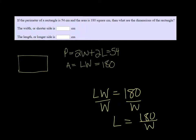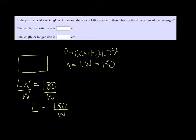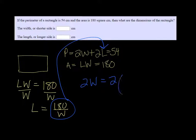So let me squish these up a little bit and move them. Alright, now I can take that and plug it in for L in my perimeter formula. So we have 2w plus 2 times 180 over W, that all equals 54.